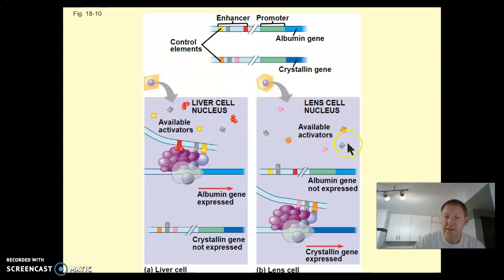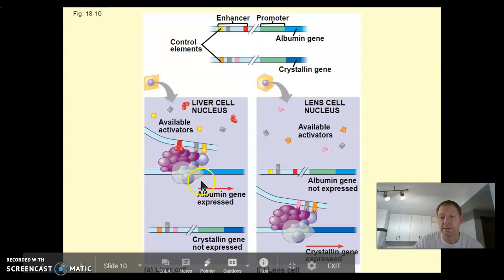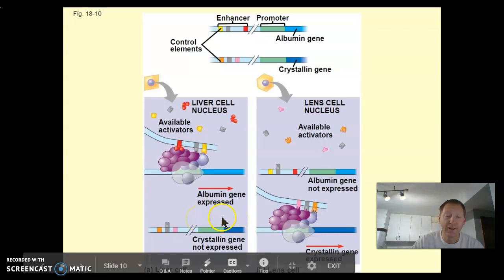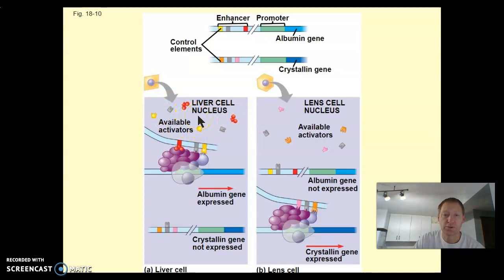Depending upon the environmental conditions we may change the activators, and certainly depending on the type of cell. This is one set of activators available in one cell, and a different set in another. In a liver cell we turn on the albumin gene, which is necessary for metabolism, but we don't turn on the crystallin gene, which is only necessary inside the lens of an eye — so we only turn that gene on in lens cells. It doesn't matter where they are in the DNA; they can be anywhere on any chromosome, but anything activated by that set of activators will be turned on. It's a neat system.